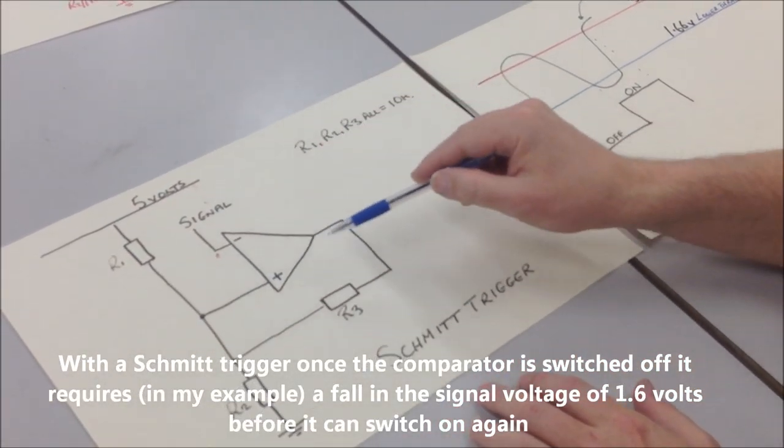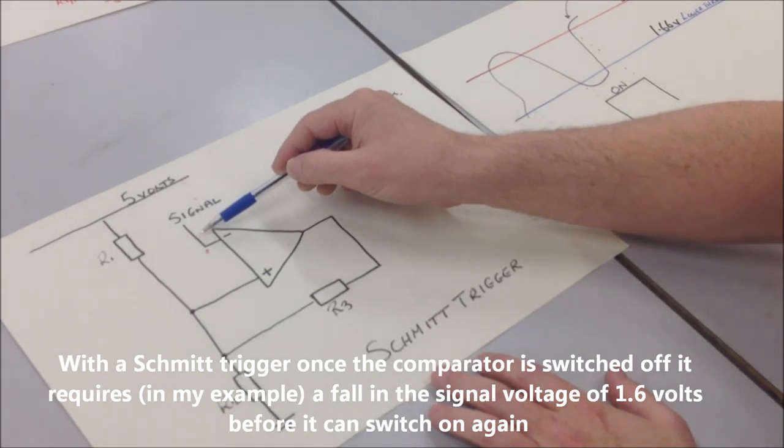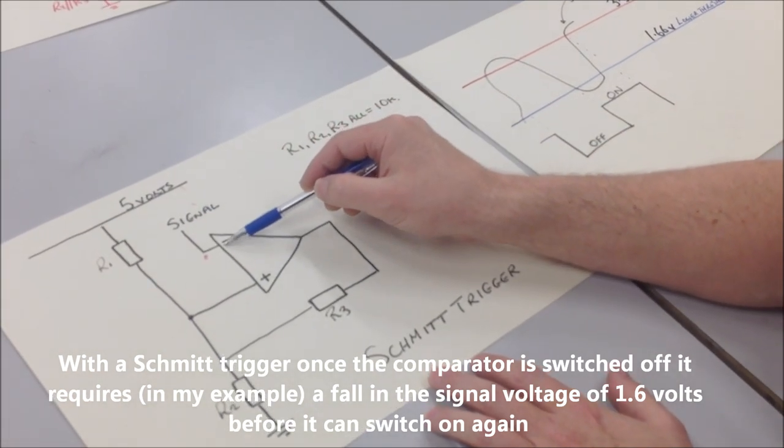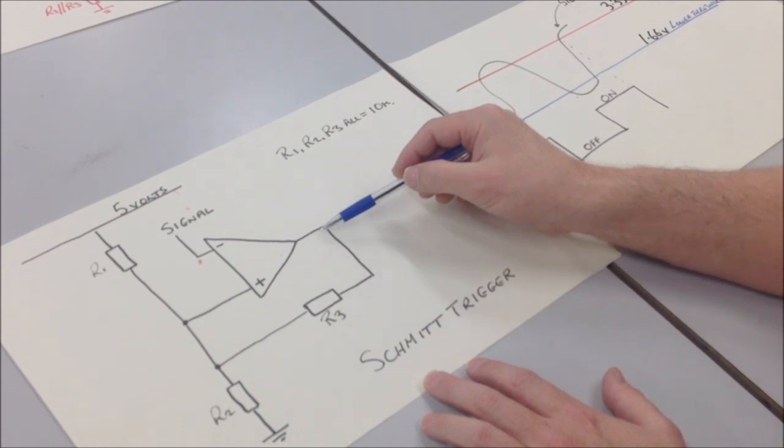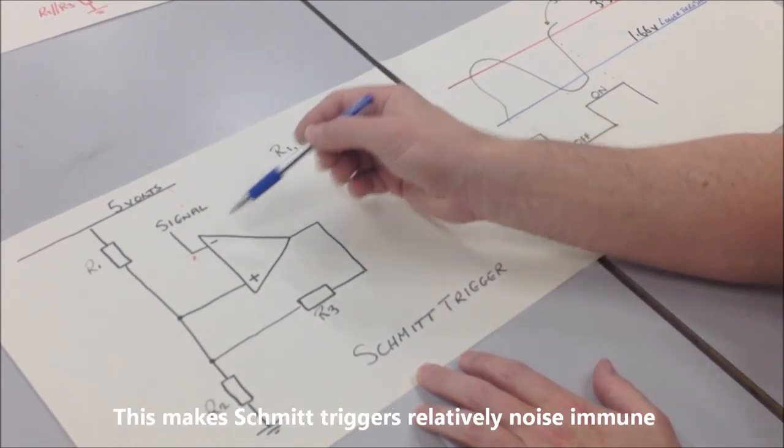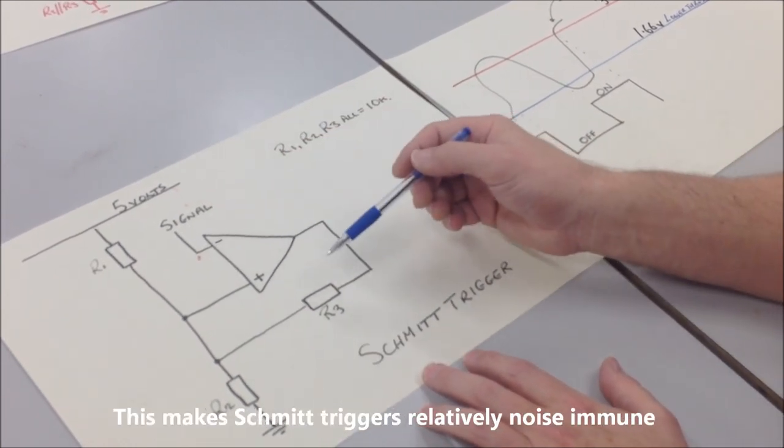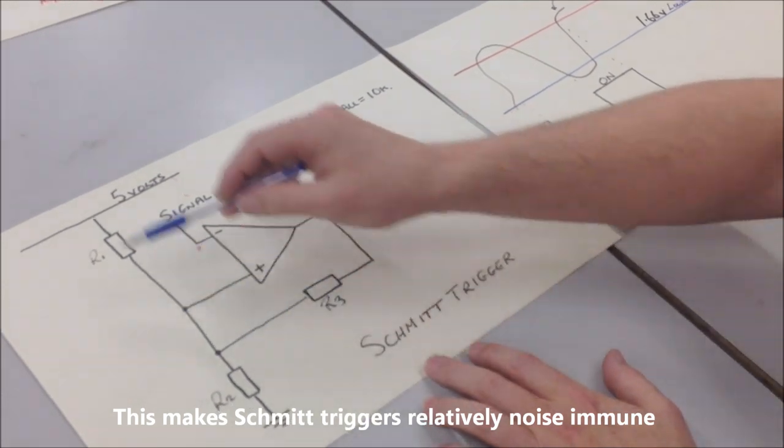The signal can vary above and below the threshold. The way we've got this one set up, when the signal goes above the threshold to this inverting input, the comparator will switch off. And when it falls below the threshold, the comparator will switch on in this configuration.